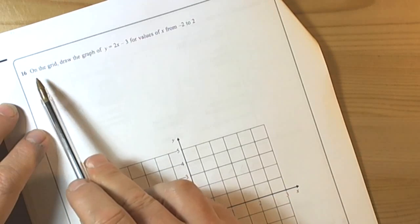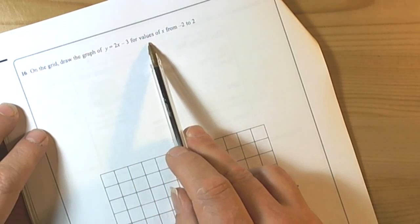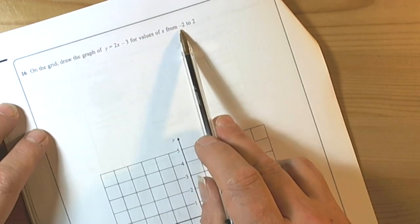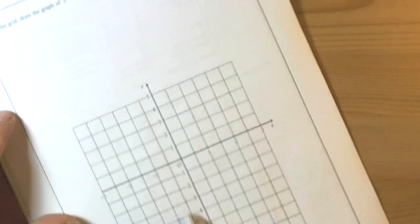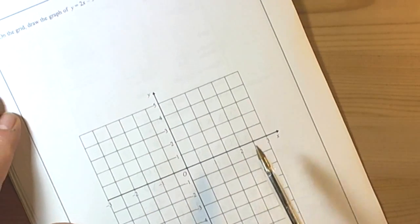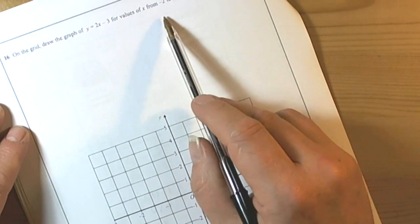So in this question we're being asked to draw the graph of values for x going from minus 2 to 2, and it's on this square grid that we have to draw the graph. But we need some coordinates to do that.